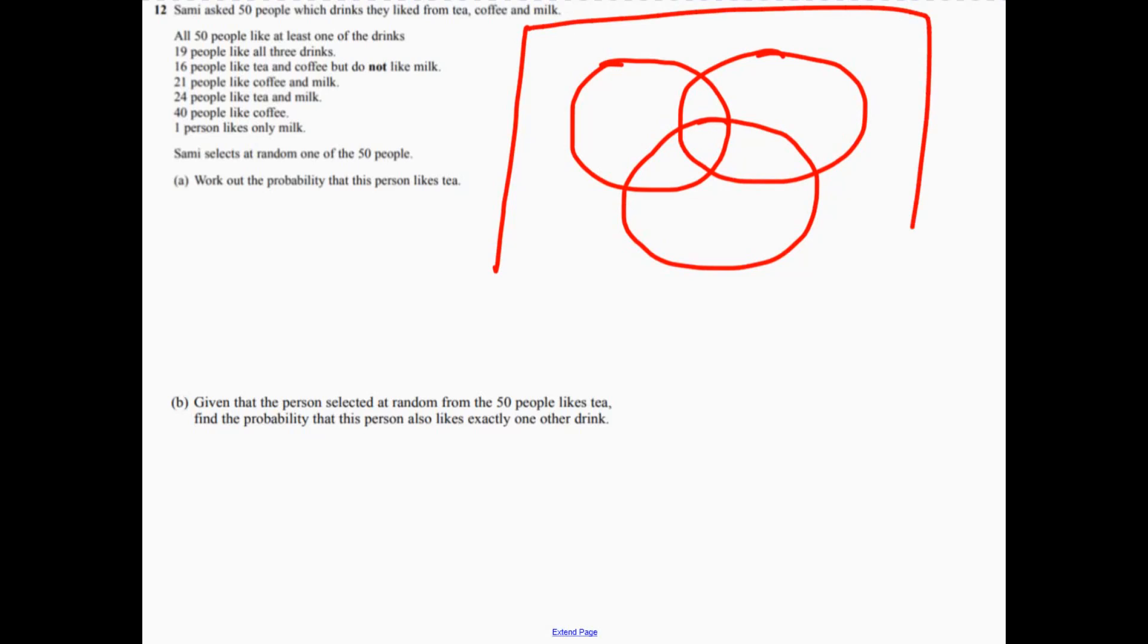So I'm just going to quickly sketch a Venn diagram. Some of them like tea, some of them like coffee, some people like milk. And there's 50 people all together.